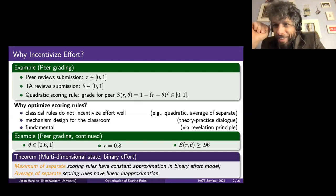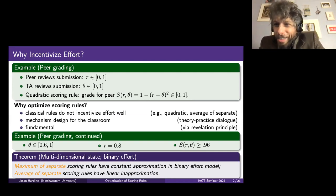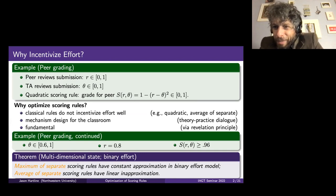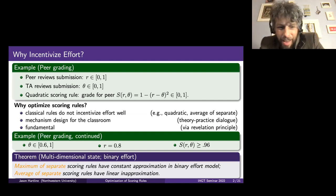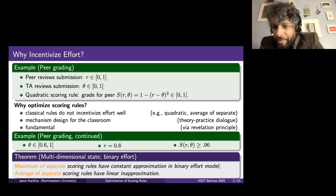We reward them for the most surprising thing that happens. They do effort, they uncover something surprising, and we reward them on what is surprising. The thing you probably would have done without thinking about optimizing scoring rules is something like average over separate — if you run an exam, you score people by averaging the grades on each part, which is basically the average of separate scoring rules. But this can be as bad as a linear approximation.